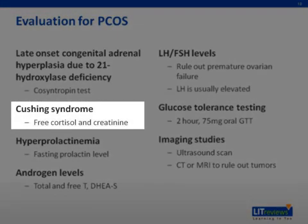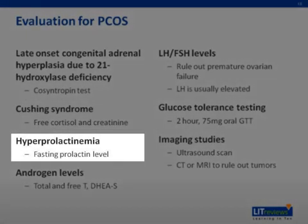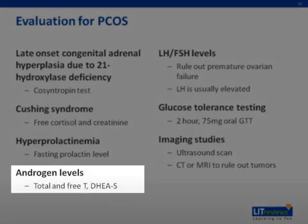Cushing's syndrome can also result in suspected PCOS. A common way to test for this is to run a urine-free cortisol level. Hyperprolactinemia needs to be ruled out as well, which can be accomplished with a fasting prolactin level; if elevated, you'll need to look for causes which include prolactinomas in the brain. Androgen levels also need to be checked to make sure there isn't a tremendous elevation that would suggest an androgen-secreting tumor.